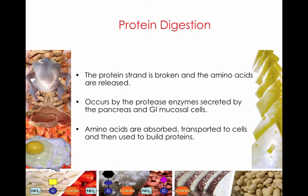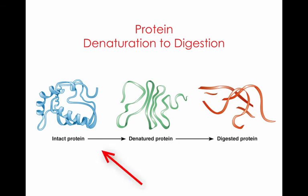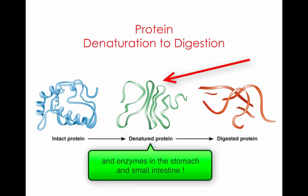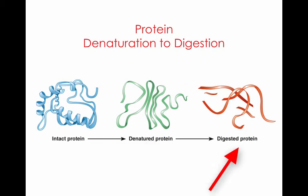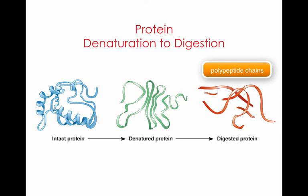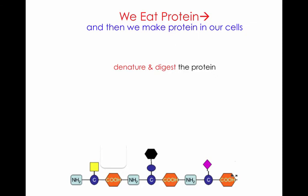Those individual amino acids are absorbed across the intestinal cells into the bloodstream and then transported to the cells to be used to build proteins. We have an intact protein on the left, and during the digestive process that protein is denatured by the acid in our stomach. On the right, we now have individual amino acids, or what are called polypeptide chains, which are broken down further, absorbed into the bloodstream, and transported to the cells. We eat protein, and then we make protein in our cells.